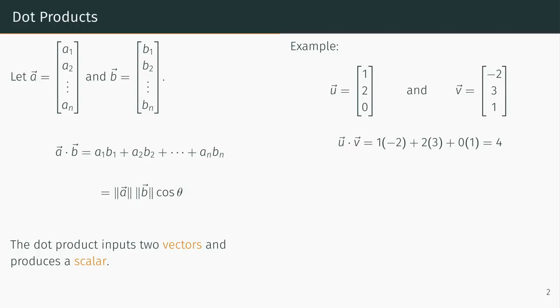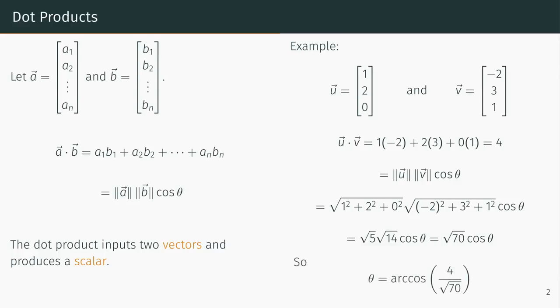We can leverage this fact in conjunction with the geometric definition of the dot product to compute the angle between the vectors u and v. By computing the lengths of u and v, we have an equation where the only unknown is theta, the angle between u and v, which we can solve for.